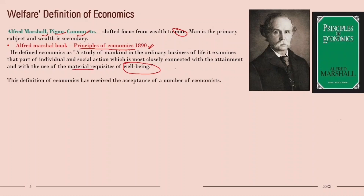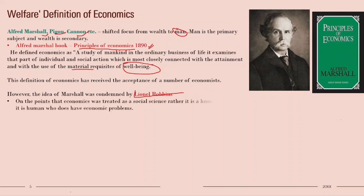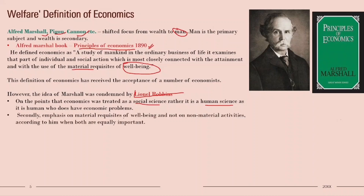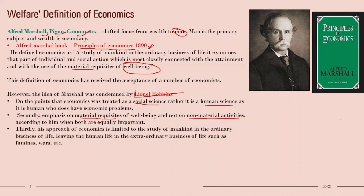Marshall's definition received acceptance, but was condemned by Lionel Robbins. Robbins disagreed on several grounds: first, economics was treated as a social science by Marshall, but Robbins said it's a human science because it is humans who face economic problems. Second, Marshall only took material requisites of well-being, but we also need non-material activities for well-being. Third, Marshall only considered ordinary business of life, whereas human life also contains extraordinary events like famine and war.